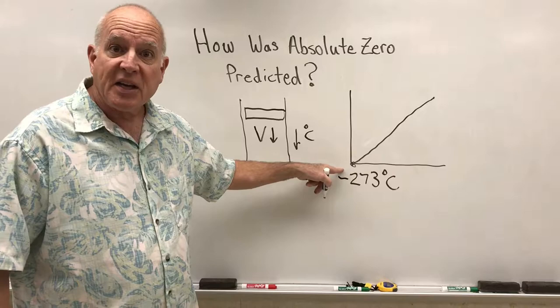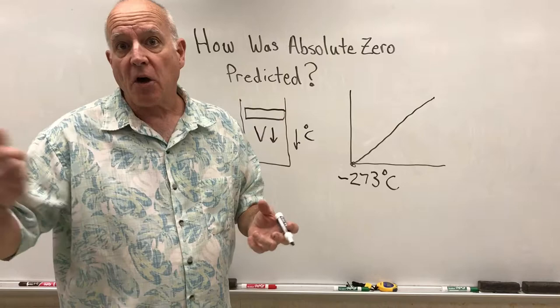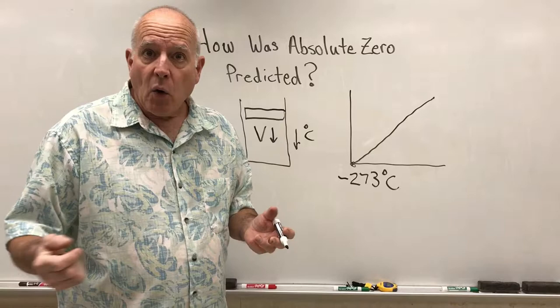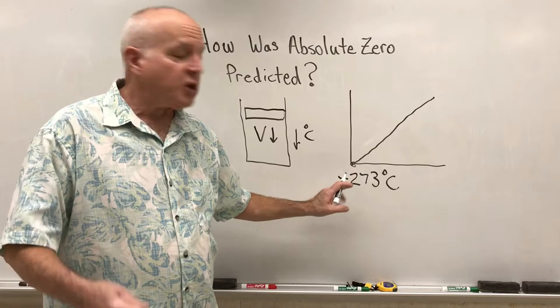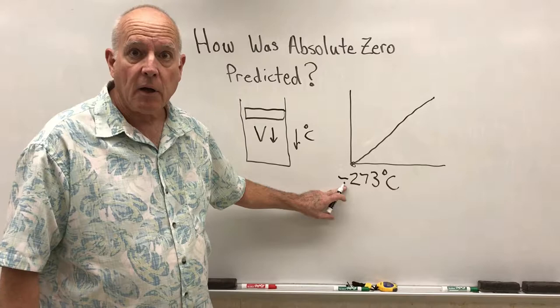The gases that are noble—helium, argon, neon—where the gases are chemically stable and don't want to combine with anybody else, those gases obey this law perfectly. If we could cool them down to minus 273 degrees centigrade, or zero Kelvin, the volume would be zero.